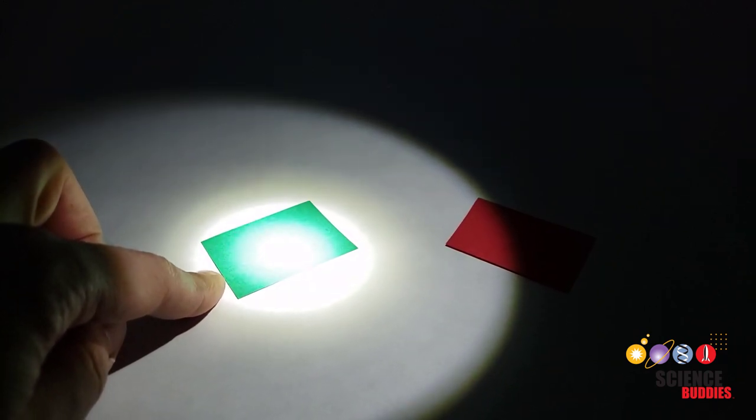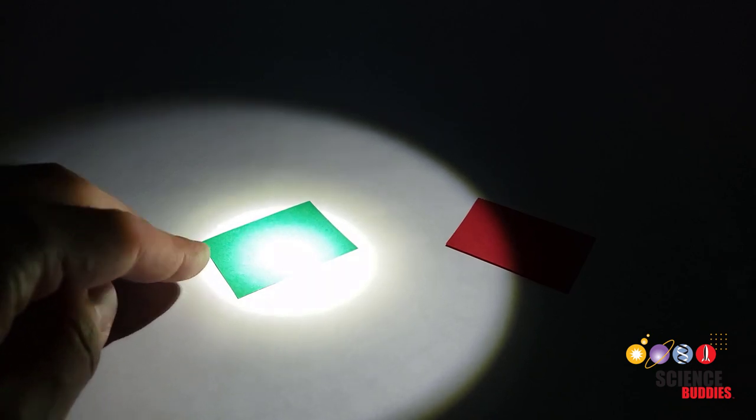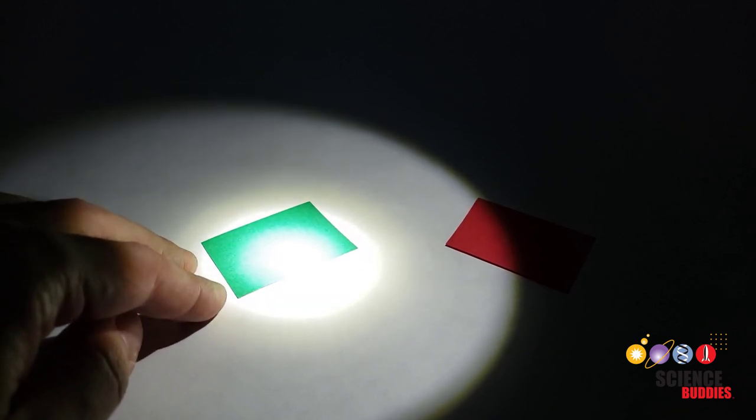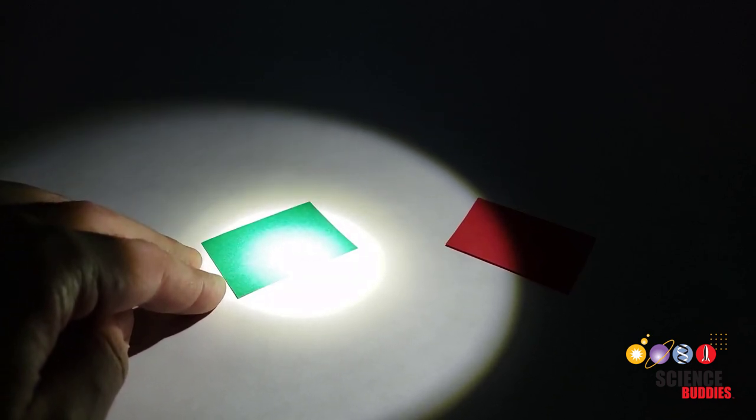For example, this green surface reflects green light but absorbs the other colors, so our eyes only see the green light, and that's why the surface looks green.